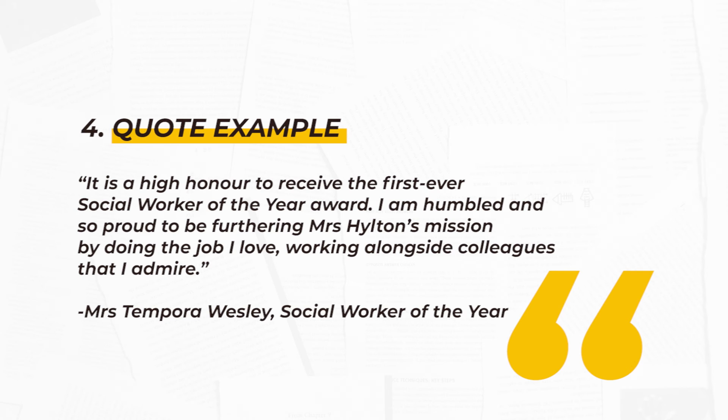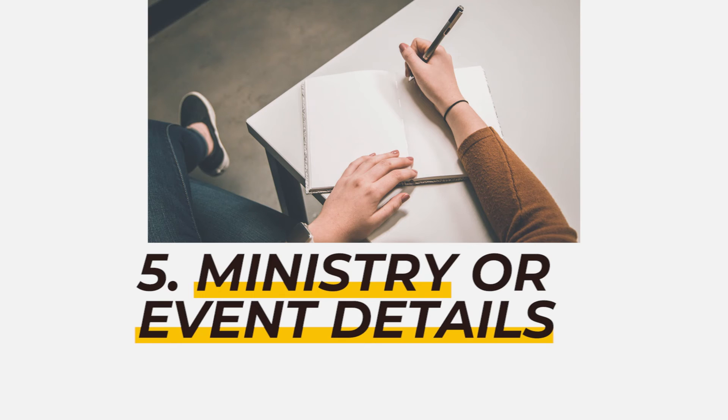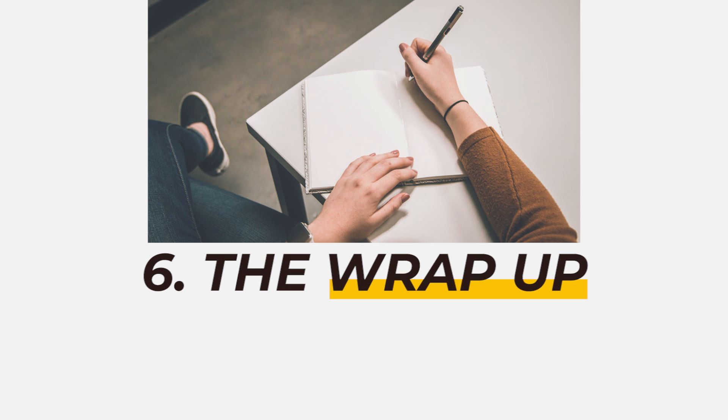Additional aspects of the outline include ministry or event details. This is where you mention the purpose of the ministry you are highlighting, or give further important details on the event not included in your lead paragraph. You can also get additional quotes from persons who participated in the event or a volunteer from the ministry, highlighting why they are involved or what was the benefit for a community member who attended your event.